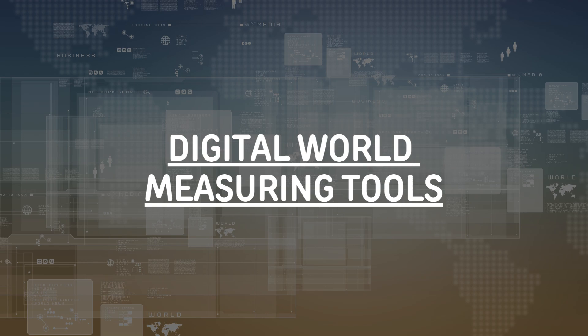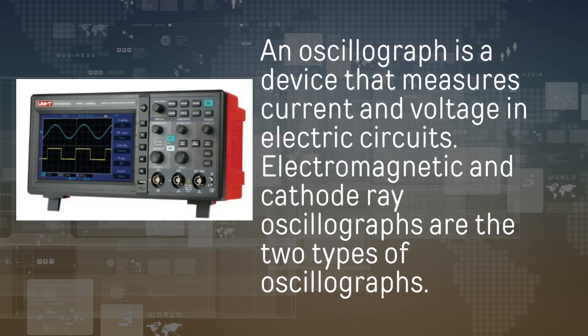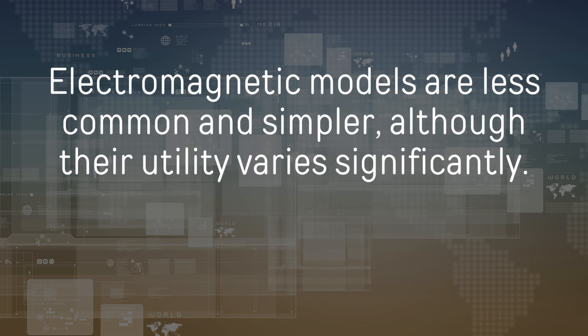Here are examples of digital world measuring tools. A voltmeter is a device that measures voltages of direct or alternating electric current on a scale commonly in volts, millivolts (0.001 volt), or kilovolts (1,000 volts). Many voltmeters are digital, with numerical displays for readings. An oscillograph is a device that measures current and voltage in electric circuits. Electromagnetic and cathode-ray oscillographs are the two types; electromagnetic models are less common and simpler, although their utility varies significantly.